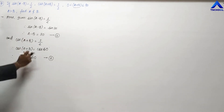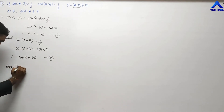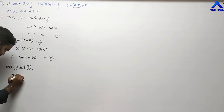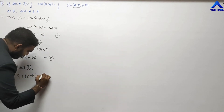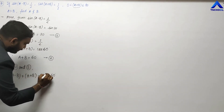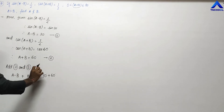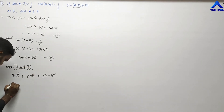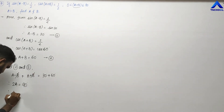We will add equation 1 and equation 2: (A - B) + (A + B) = 30 + 60. The -B and +B cancel, so 2A = 90, and therefore A equals 45 degrees.